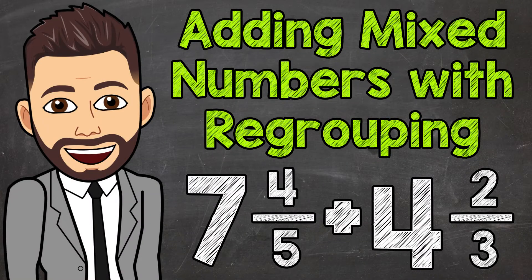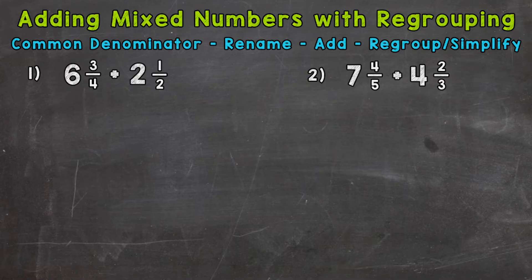Welcome to Math with Mr. J. In this video, I'm going to cover how to add mixed numbers with regrouping. Once we get to our answer, it's going to require some regrouping because the fractional parts of these mixed numbers are going to add to give us something more than a whole. So we're going to have an improper fraction within that answer, and we do not want to leave it with an improper fraction. You'll see exactly what I mean as we go through our two examples here.